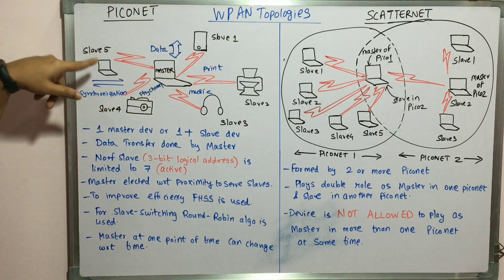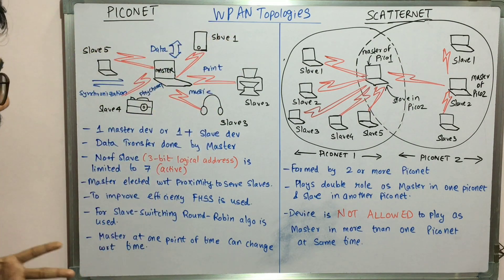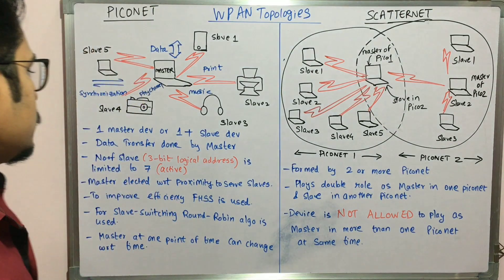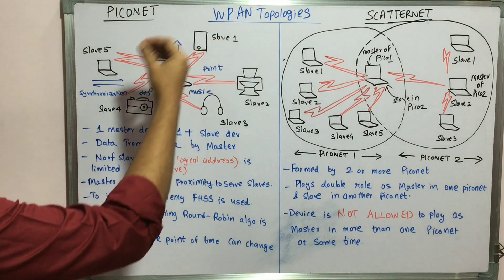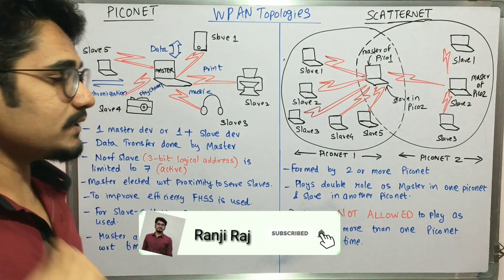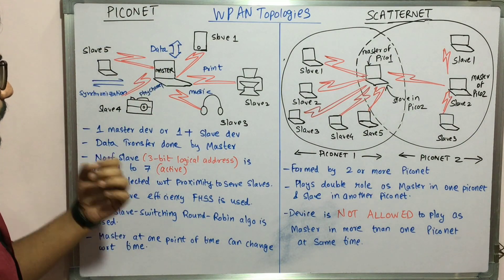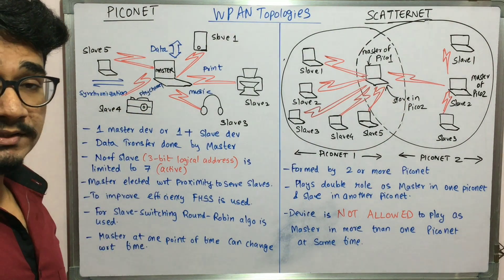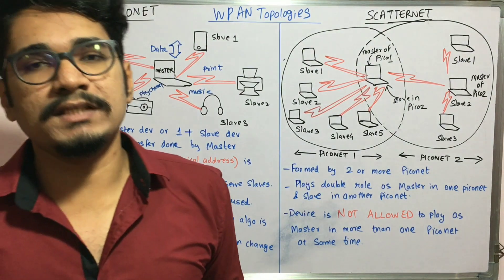Whatever connections you see here — the red lines — the master is connected to a number of slave devices, and the master decides when it needs to relinquish the connection to that particular slave device. Each slave device has a three-bit logical address assigned to it so that it can uniquely identify which master it is connected to, and the number of slaves is limited to seven.